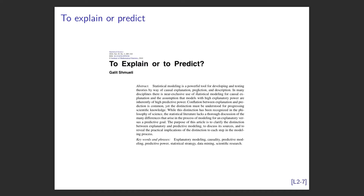The Shmueli paper is called 'To Explain or Predict' - a classic text. She argues you need to think about what your question is before you choose your model. I once did support vector machines on genetic data and it predicted really well, but when the collaborator asked which part of the genome best indicates the species, I had to say I don't know - SVMs predict but won't explain. So we went and did a logistic regression instead.